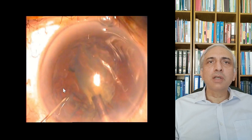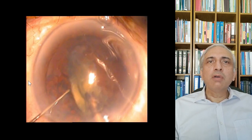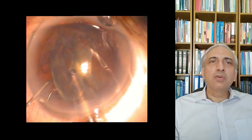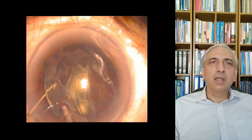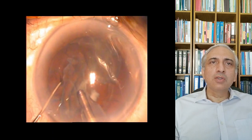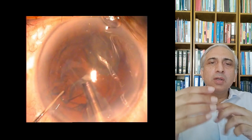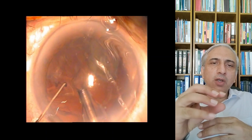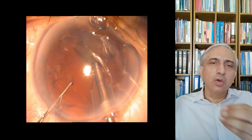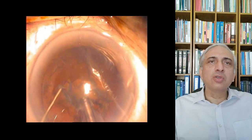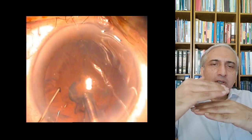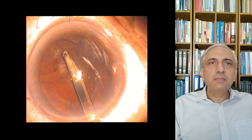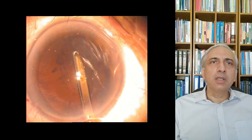At the end of phaco, all work is done within the capsular bag. During nucleus removal, a post-occlusion surge can occur — when a nuclear chunk occludes the phaco tip and suddenly passes through, causing the anterior chamber to collapse, which can drive the posterior capsule into the nucleus. Care must be taken to avoid this.